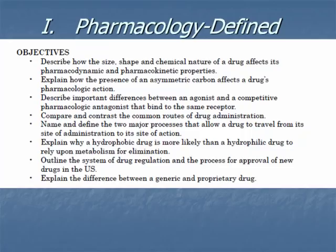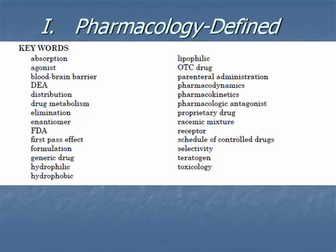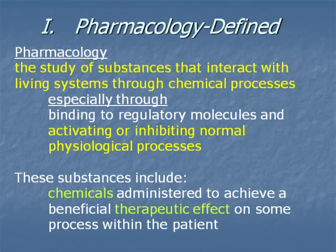Students should be able to name and define the two processes that allow a drug to travel from its site of administration to its site of action, explain why a hydrophobic drug is more likely than a hydrophilic drug to rely upon metabolism or elimination, outline the system of drug regulation and approval of new drugs in the U.S., and explain the difference between a generic and a proprietary drug. Many of the key terms are on your review sheet for chapter one; consult your textbook for any unfamiliar terms.